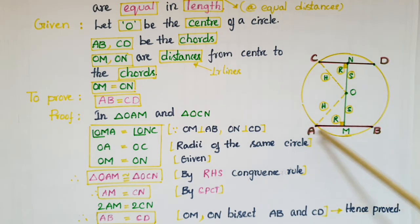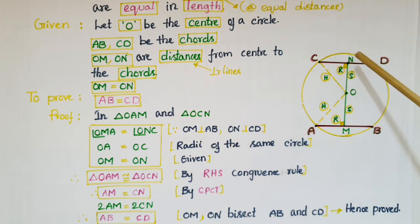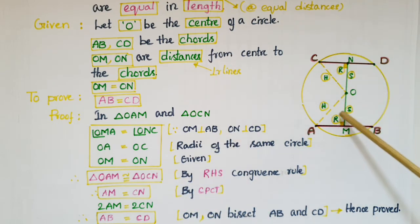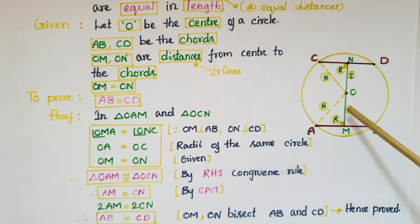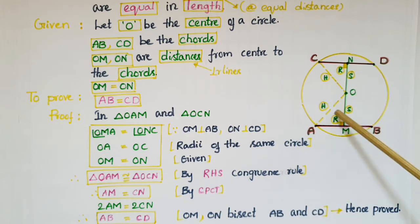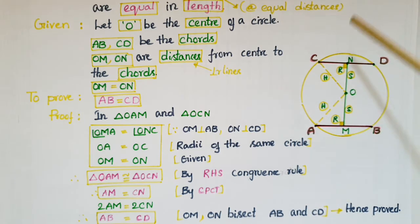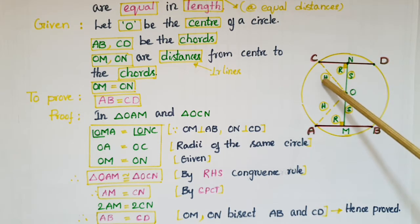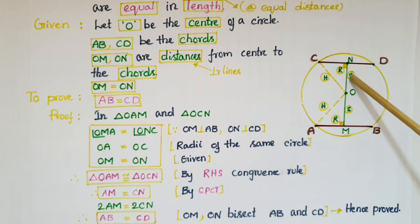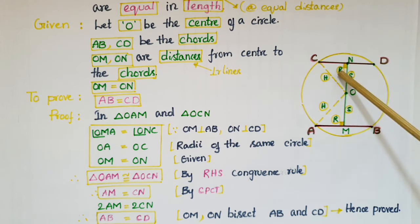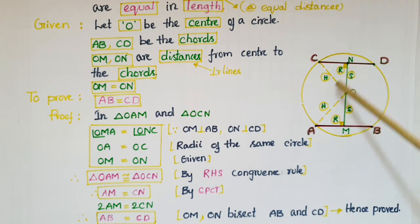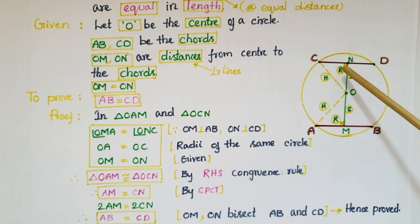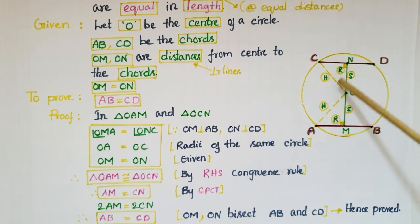By using the RHS congruence rule, we can say these two triangles are congruent. Triangle OAM is congruent to triangle OCN by RHS congruence rule, because the right angle, hypotenuse, and side of this triangle are equal to the right angle, hypotenuse, and side of this triangle. Once these two triangles are congruent, we can equate the corresponding parts of these two triangles.